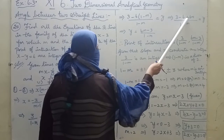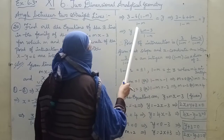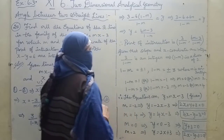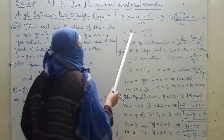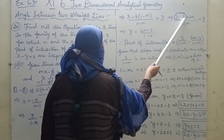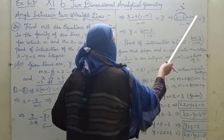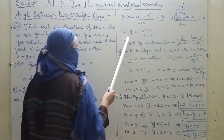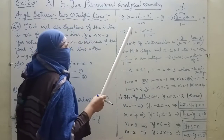Expanding: 3 minus 6(1 - m), all divided by (1 - m), equals y. That gives us 3 - 6 + 6m = 6m - 3. So y = (6m - 3) / (1 - m).